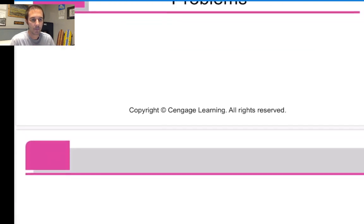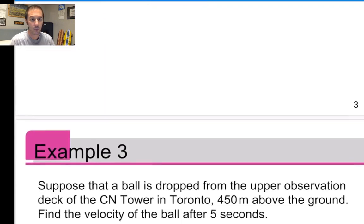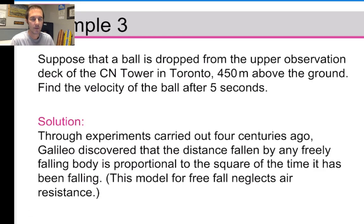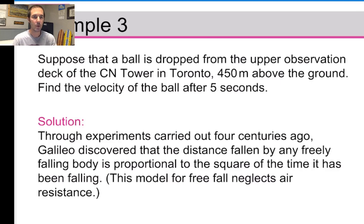So the Tangent and Velocity Problem. First we'll look at velocity. In this example, we're dropping a ball from the upper observation deck of the CN Tower in Toronto. If you haven't been there and you're not faint of heart, I recommend checking it out. You take this amazing glass elevator up to the top of the tower, which provides amazing views, blasting you upwards to 450 meters. We'd like to figure out the velocity of the ball after five seconds.